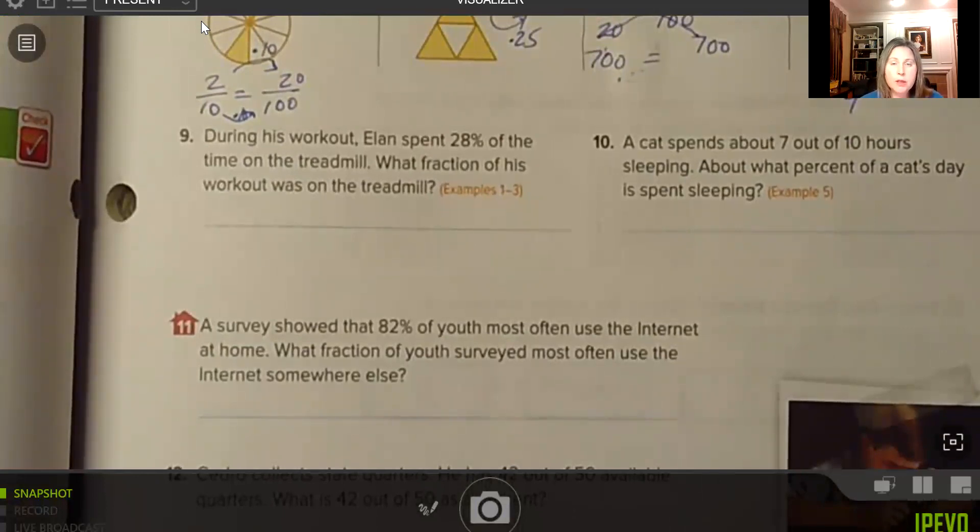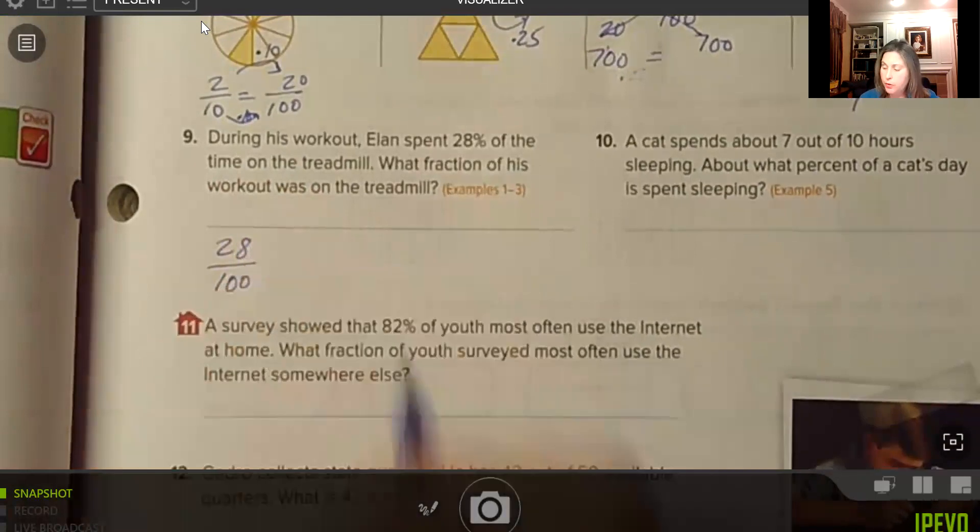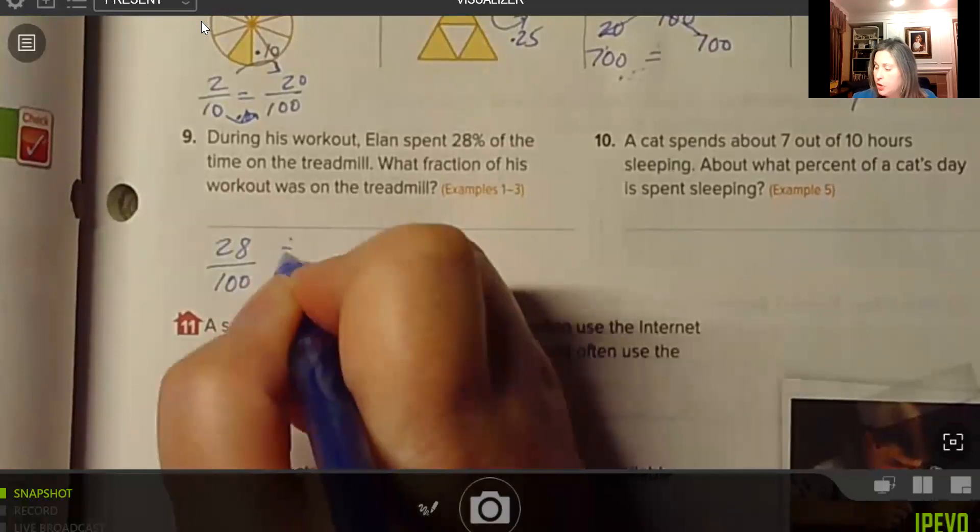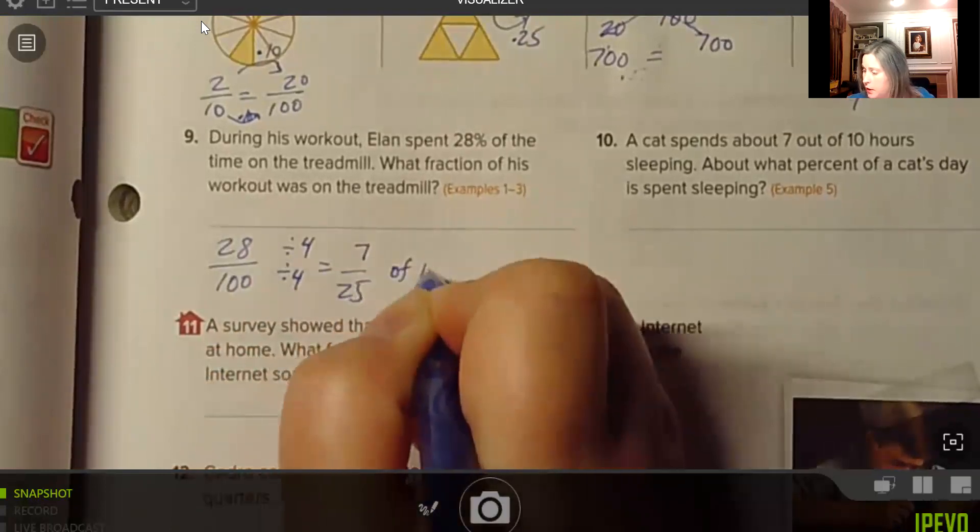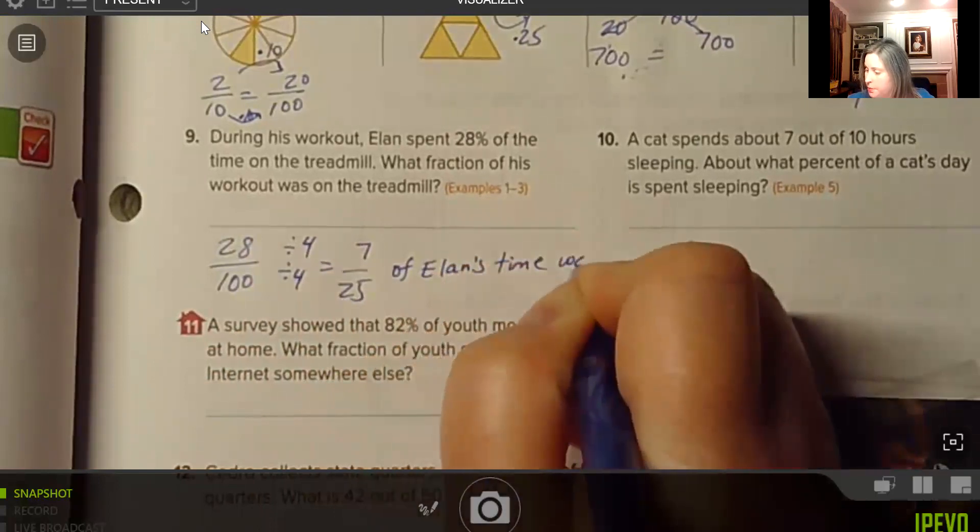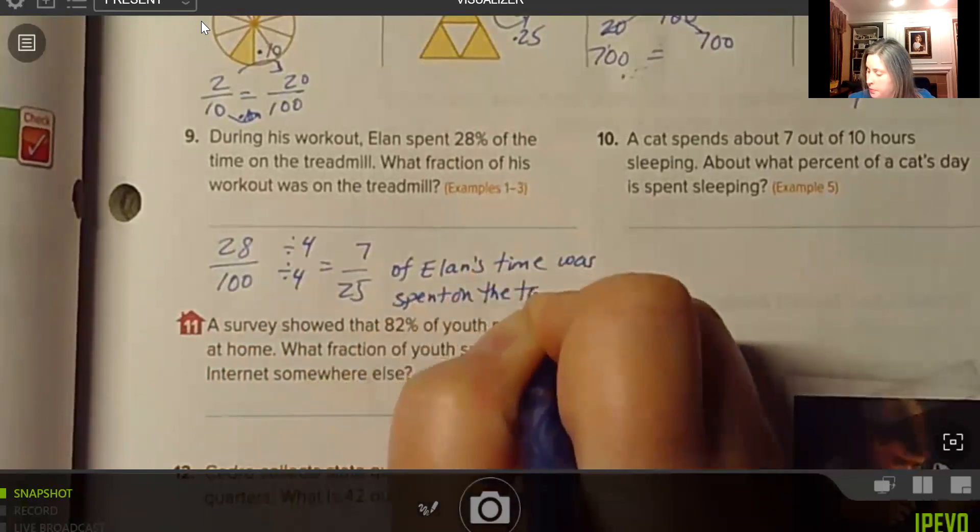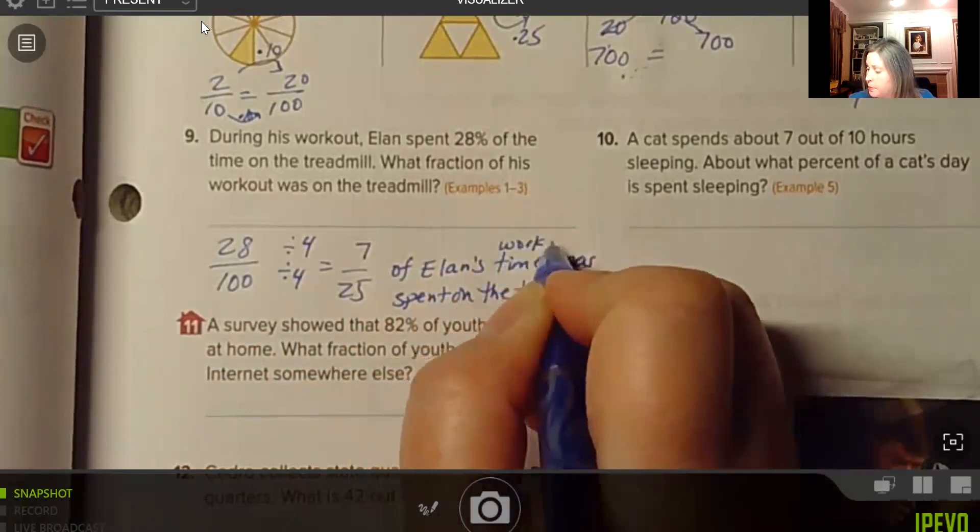Number 9. During his workout, Elan spent 28% of the time on the treadmill. What fraction of his workout was on the treadmill? So 28%, I can write that as a fraction. So 28 percent, 28 per 100. And I note that 28 and 100 have a GCF of 4, so I can divide each of these by 4. And I got 7/25 of Elan's workout time was spent on the treadmill.